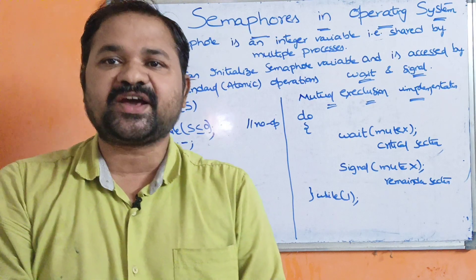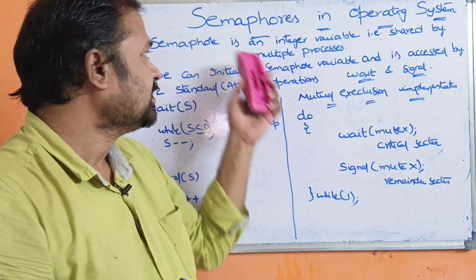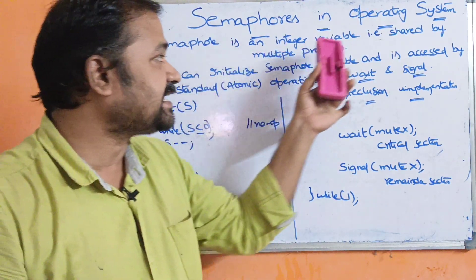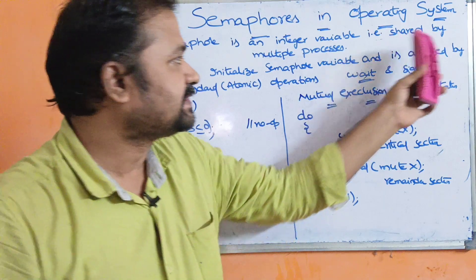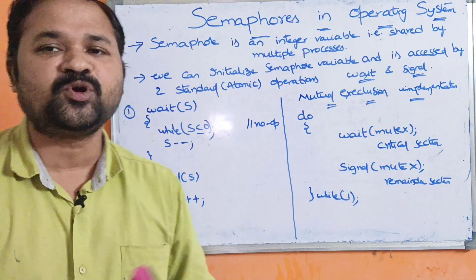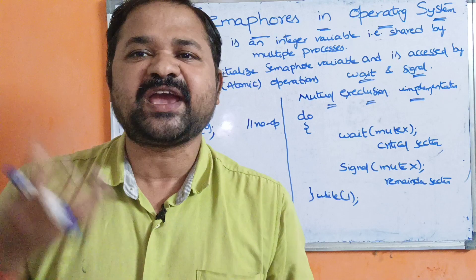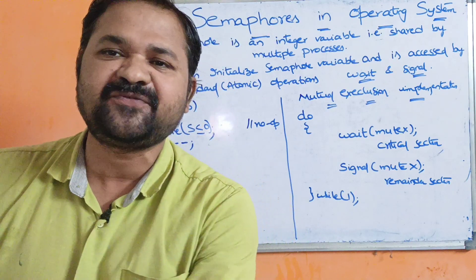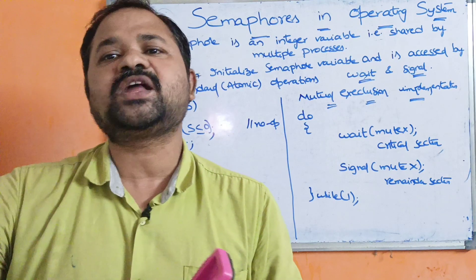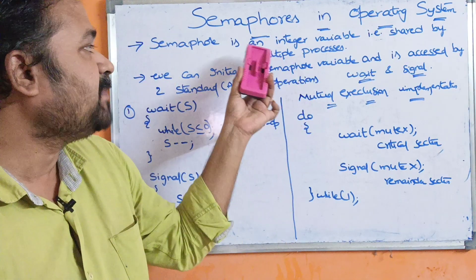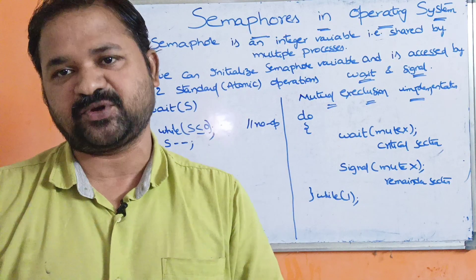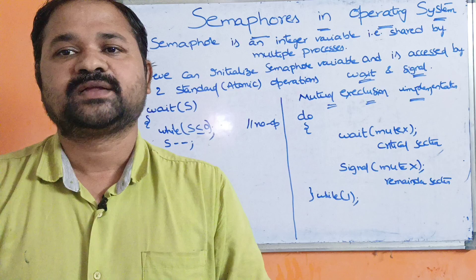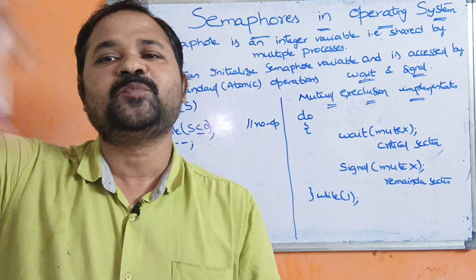In this video, we are going to discuss about semaphores in operating systems. A semaphore is an integer variable that is shared by multiple processes. For example, if we have 5 processes such as P1, P2, P3, P4, P5 in the system, then all 5 processes can make use of this semaphore variable.